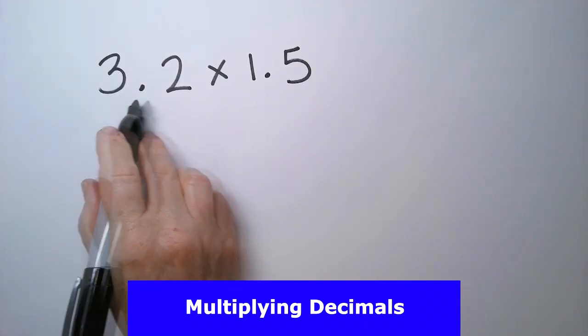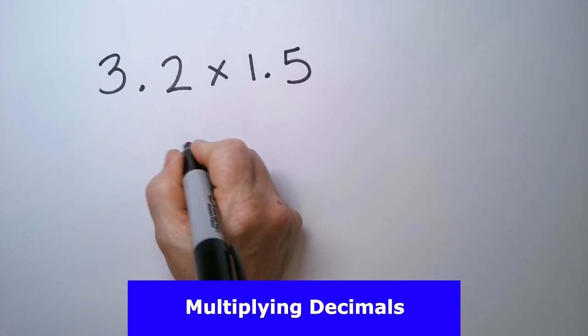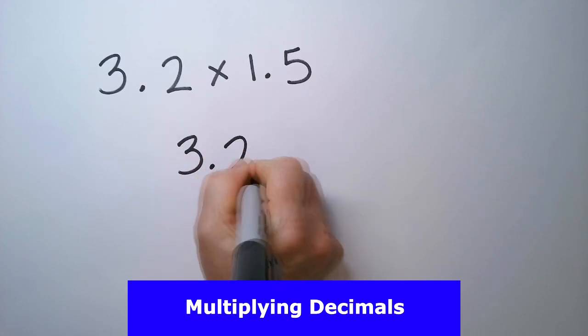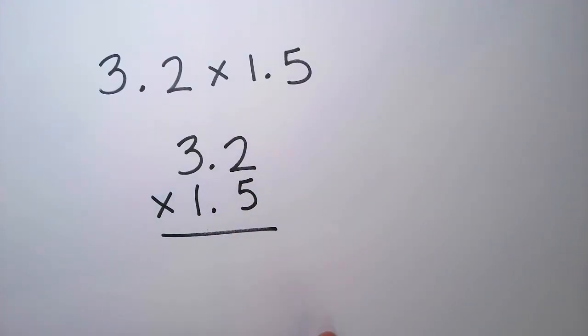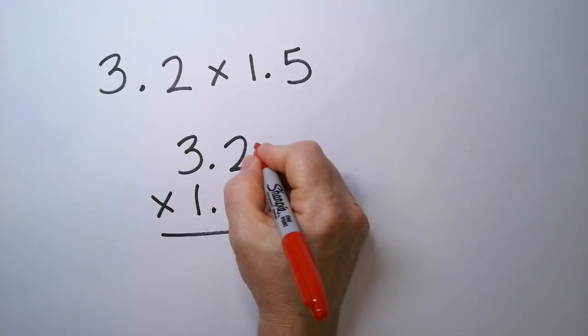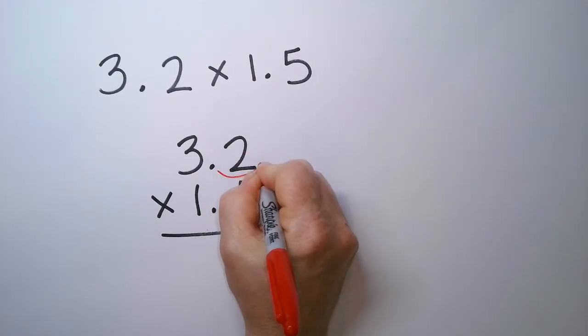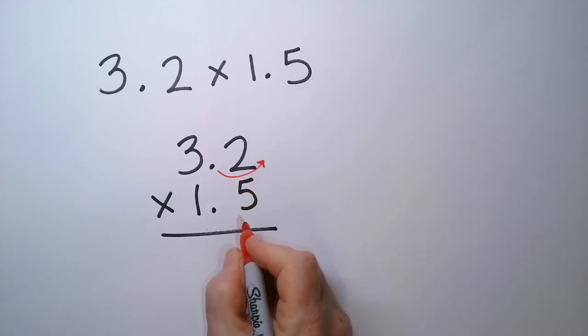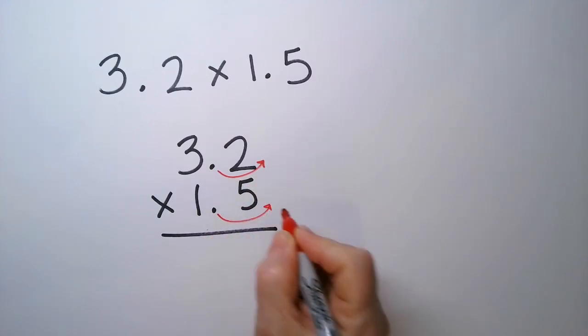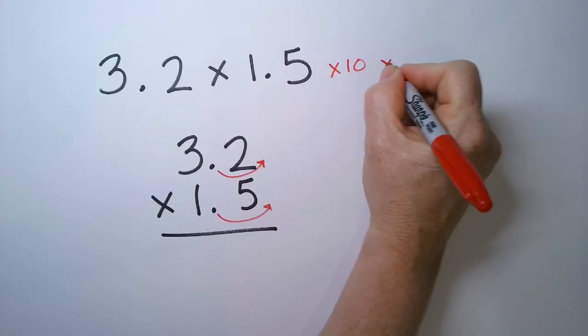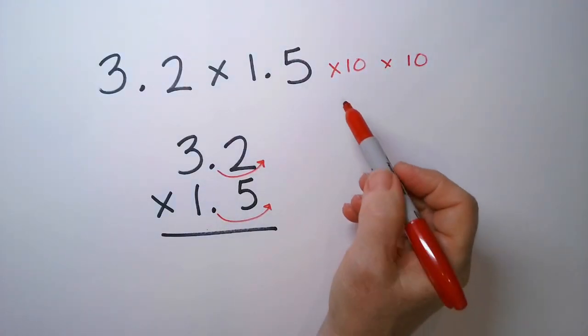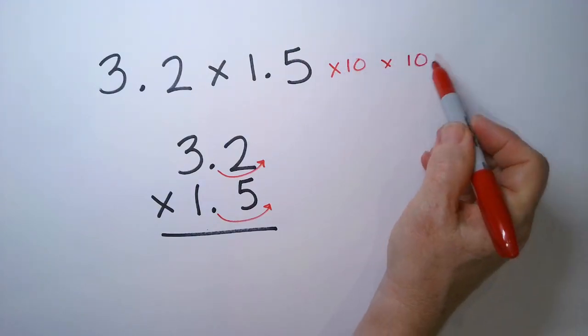To multiply two decimal numbers together, we're going to rewrite the problem so they're stacked on top of each other. And we're going to turn this into a whole number problem. We're going to multiply this one by 10, so the decimal point is going to come here, and this one by 10. So I'm going to multiply this number by 10, and then this number by 10, and at the end of the problem, I'm going to divide by 10 and divide by 10.